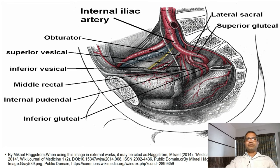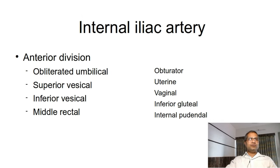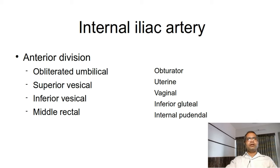The internal iliac artery gives out branches. Before giving out branches, it divides into two divisions or two main trunks — anterior division and posterior division. This internal iliac artery lies mainly in relation with the greater sciatic foramen, specifically in relation with the upper part of the greater sciatic foramen. The anterior division continues downward up to the ischial spine — the inner surface of the ischial spine — and the posterior division goes posteriorly and laterally towards the opening of the greater sciatic foramen, mainly to the gluteal aspect.